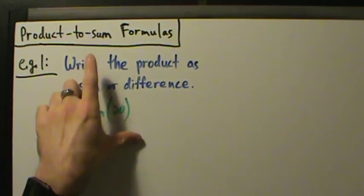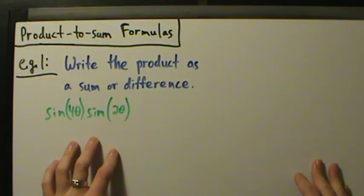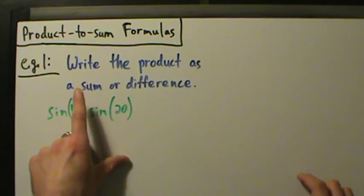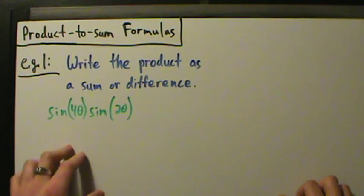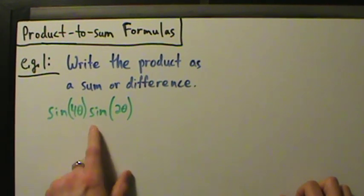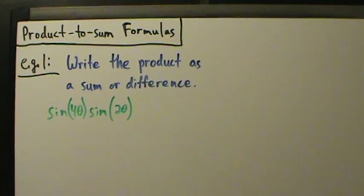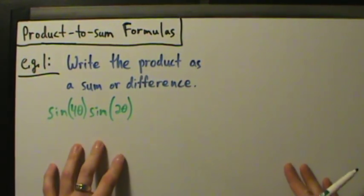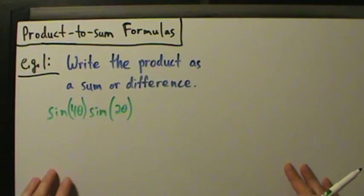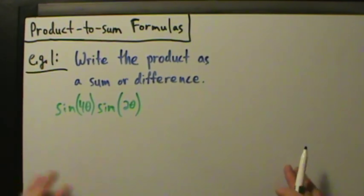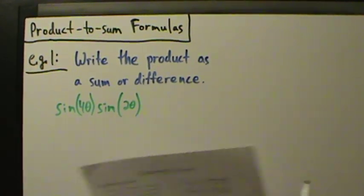Here's example one of using product-to-sum formulas to evaluate or rewrite tricky expressions. We have to write the product as a sum or a difference. For the most part, problems like these really aren't that bad. Sometimes you'll just have to be careful of your plus and minus signs and watch out for even and odd identity type stuff. We'll see that in some later examples. Just also make sure that we use the right formula.